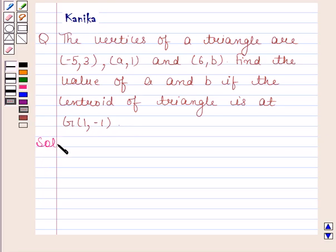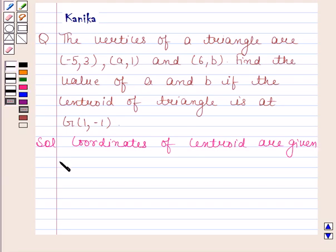Let us now begin with the solution. We have learned that if vertices of the triangle have coordinates (x1,y1), (x2,y2), and (x3,y3), then coordinates of the centroid are given by (x1+x2+x3)/3 and (y1+y2+y3)/3.